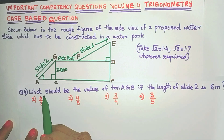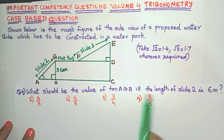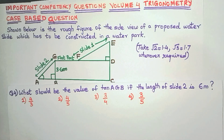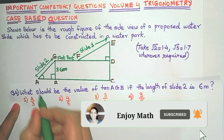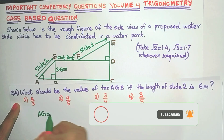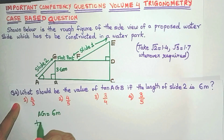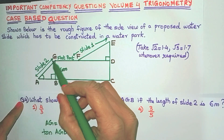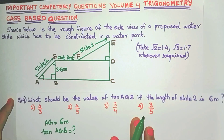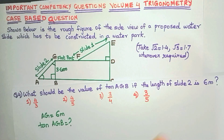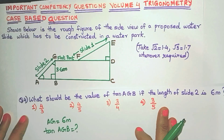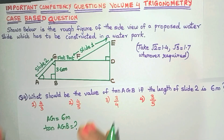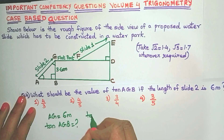Now let's see the next question: what should be the value of tan(AGB) if the length of slide 2 is 6 meters? We are focusing on slide 2 again. AG = 6 meters and we have to find tan(AGB). Remember not to use data found in previous questions unless mentioned — we freshly use only the data given here.